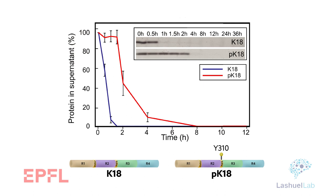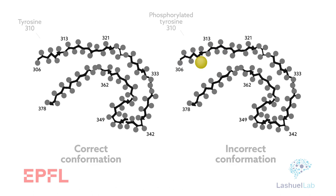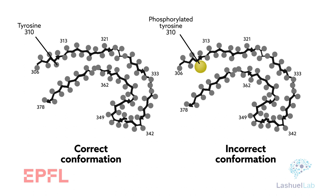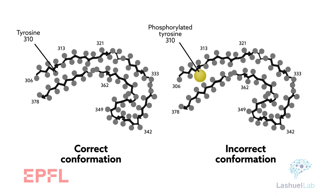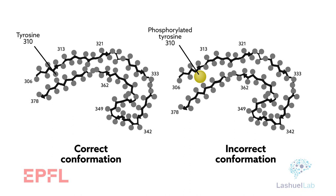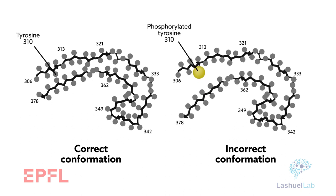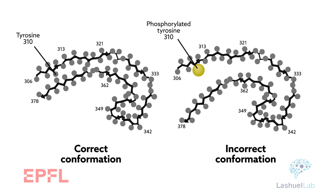It also regulates tau binding to microtubules and membranes. Notably, at tyrosine-310, phosphorylation led to local structure modifications in the microtubule binding domain. These changes reduced the region's ability to adopt the beta-sheet conformation that makes tangle formation easier.